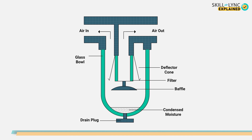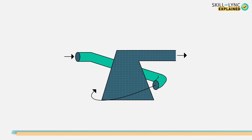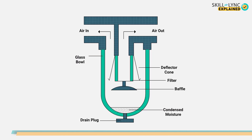The air at the inlet changes direction suddenly due to the shape of the dryer. Additionally, a deflector cone swirls the air, which causes the water in the air to be thrown outwards onto the walls of the separator and get collected in a trap at the bottom. The bottom has a drainage from where the condensed moisture can be easily drained out.